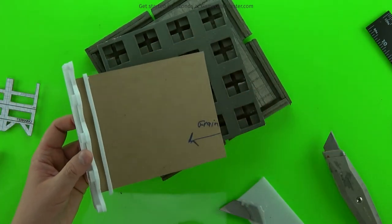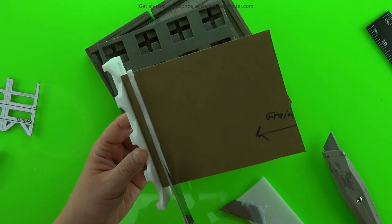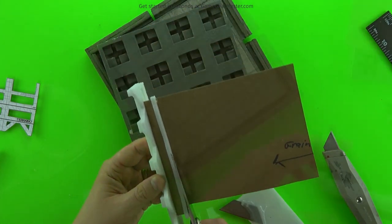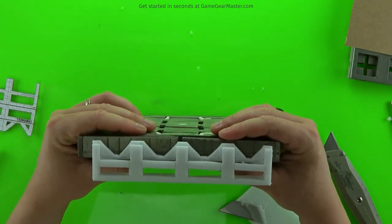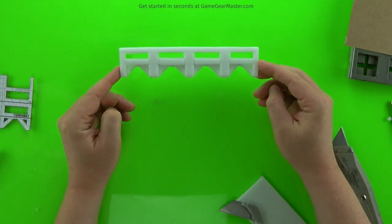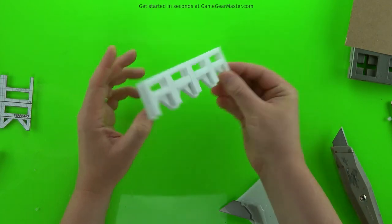And then just trim off the bits we don't need. And then just give it a test fit. Here I'm test fitting it on the modular grid borders. It also works on regular floor tiles too. The border on those will fit this as well.